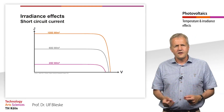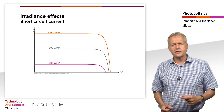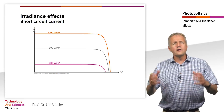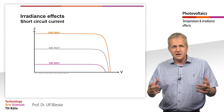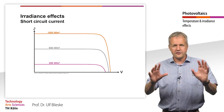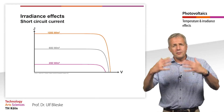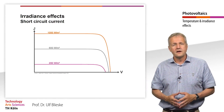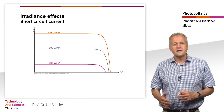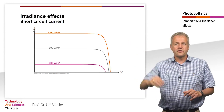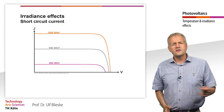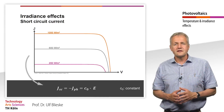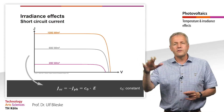Let's start with irradiance and its influence on the short-circuit current density. In an ideal solar cell without losses, all incident photons with sufficient energy generate electron-hole pairs. If the number of photons doubles, the number of electron-hole pairs also doubles. Therefore, for the ideal solar cell, there is a linear relationship between the photocurrent and the irradiance. Since the short-circuit current corresponds to the photocurrent, the short-circuit current density also increases linearly with the irradiance.